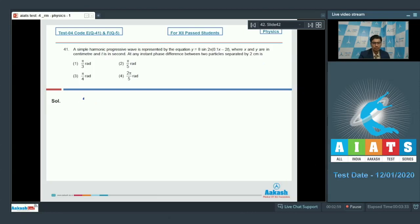The phase difference between particles separated by distance delta x can be written as k delta x where k is the propagation constant and here it is equal to 2 pi into 0.1. When substituting the value, we write 2 pi into 0.1 and delta x is equal to 2. So this will be equal to 0.4 pi or 2 by 5 pi, which means the answer for this particular question is option number 4.